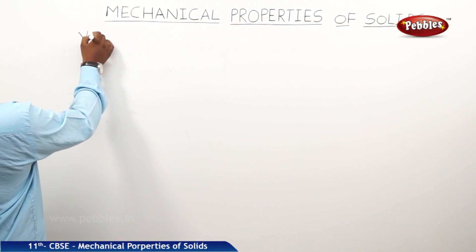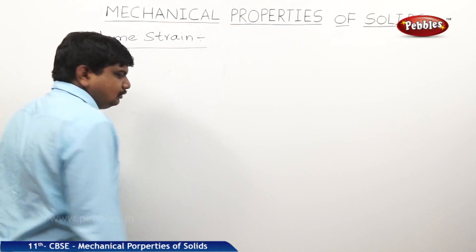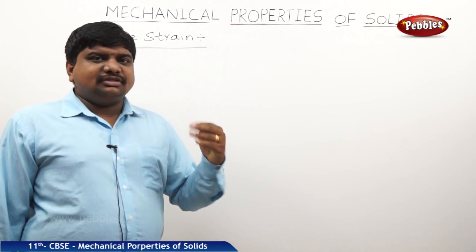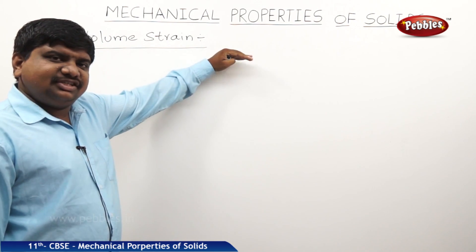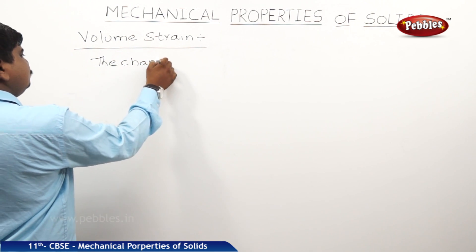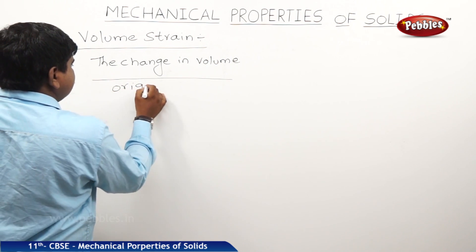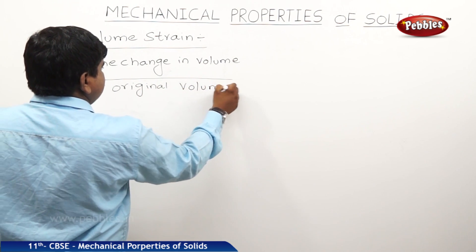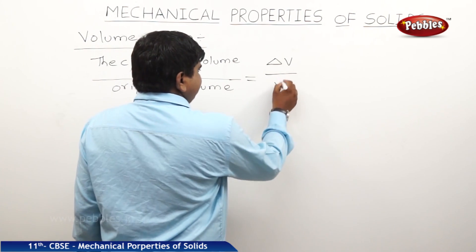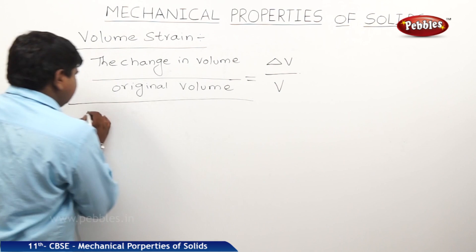The next strain is volume strain. The change in volume divided by the original volume gives the volume strain. Due to the applied force or stress, there is a change in volume, and the change in volume by the original volume of the body gives the volume strain. Therefore, volume strain equals delta V divided by V, where delta V is the change in volume and V is the original volume.